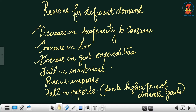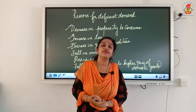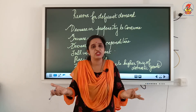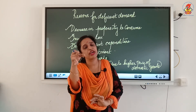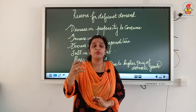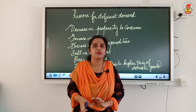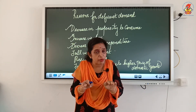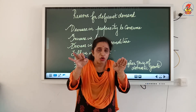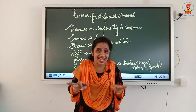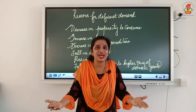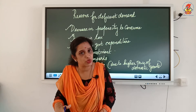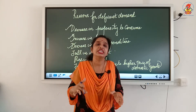The next reason is decrease in government expenditure. If the government is not spending on construction of roads, railways, or bridges, there is no government demand for goods and services. People also earn less income due to lower employment levels. Both the government's demand and people's demand for goods and services decrease, causing aggregate demand to fall below aggregate supply, resulting in deflationary gap or deficient demand.